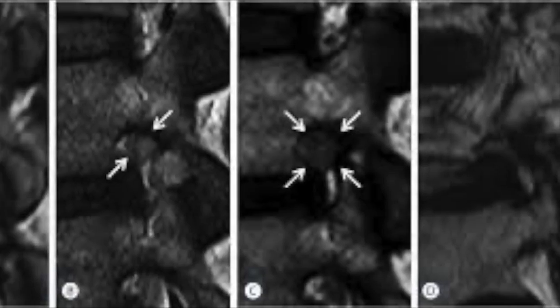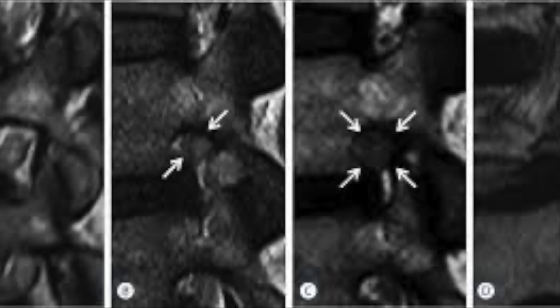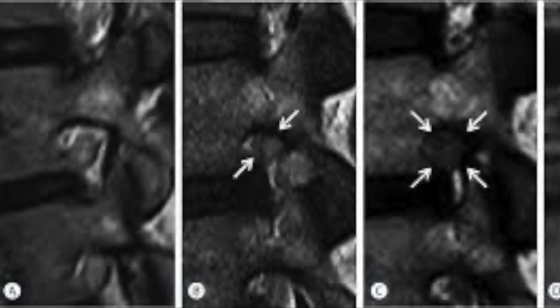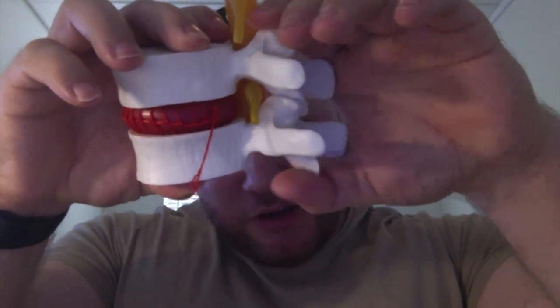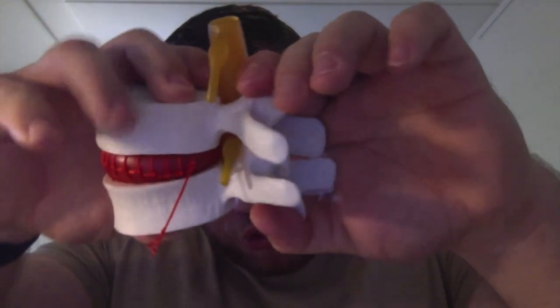So if you have a combined disc lesion or disc-arthritis lesion, and also arthritis in the facet joints, this will actually pre-narrow the neuroforamen. And then when you increase the arch in the back, there is no real space there to begin with, and now you crush the root, and you will have chronic radiculopathy. So that's a contraindication for arching the back.